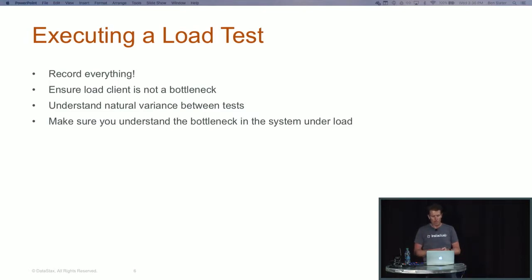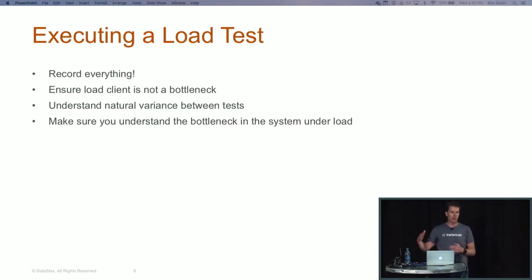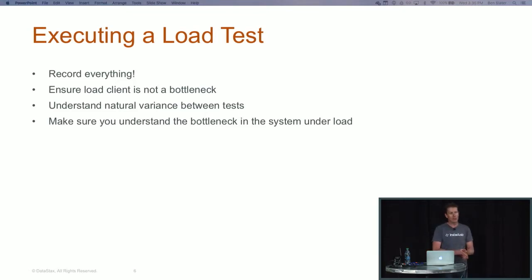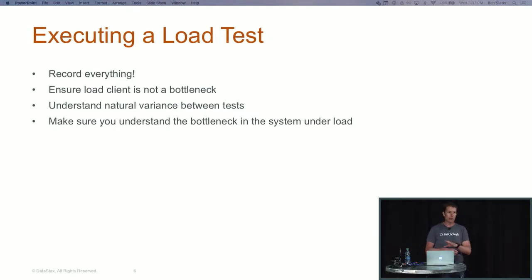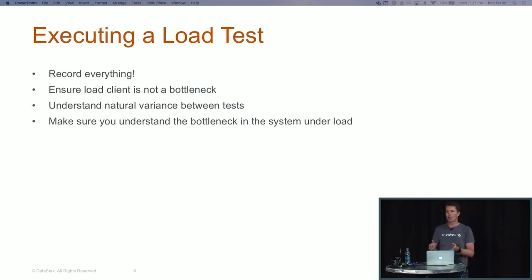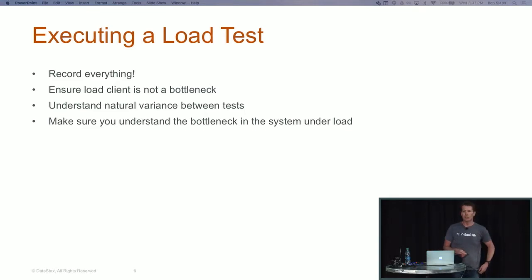In cloud environments you'll see more variance than running on bare metal in a data center where you know nothing else is going on. The fourth tip is: make sure you understand the bottleneck in the system under load. If you think you've hit peak capacity, you should be able to identify what you've hit — the IO limit, CPU usage limit, garbage collection. There should be a system resource that's maxed out. If you can't pinpoint that, you probably need to do more work understanding what's going on in the environment.